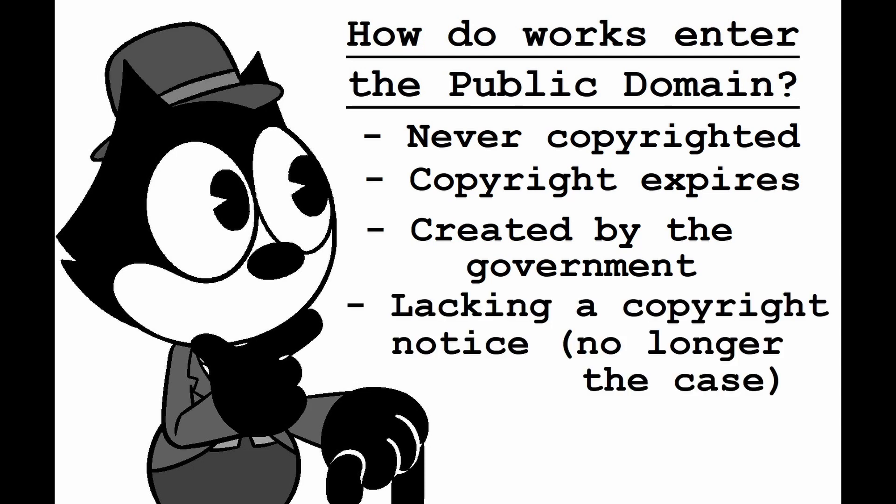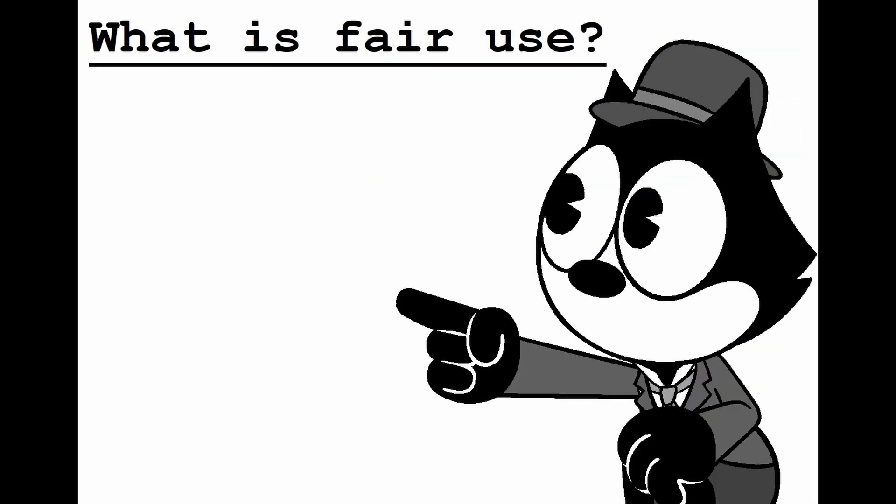Fourth, in the case of older works, not having the proper copyright notice in a work would make it public domain, but this is no longer the case since works get automatically copyrighted today. Or fifth, a work gets dedicated to the public domain, either upon publication or if the author relinquishes their copyright.